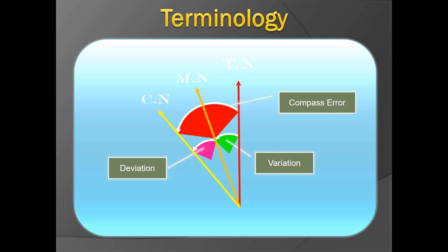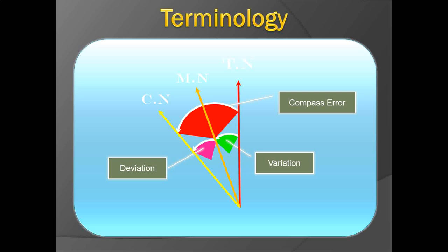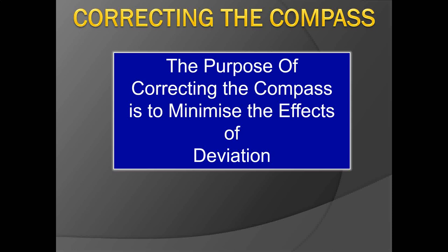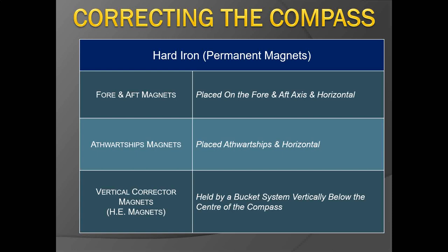Compass error changes with a change in heading because deviation changes with heading. The purpose of correcting the compass is to minimize the effects of deviation. The ship's temporary magnetism, or soft iron component, keeps changing — that's why the compass must be corrected. The permanent magnetism from the ship's construction stays relatively constant, but cargo changes or structural alterations cause the temporary magnetism to change. Permanent magnetism is corrected using permanent magnets.